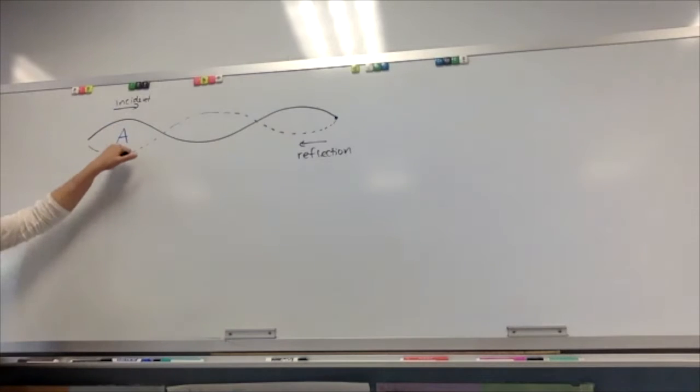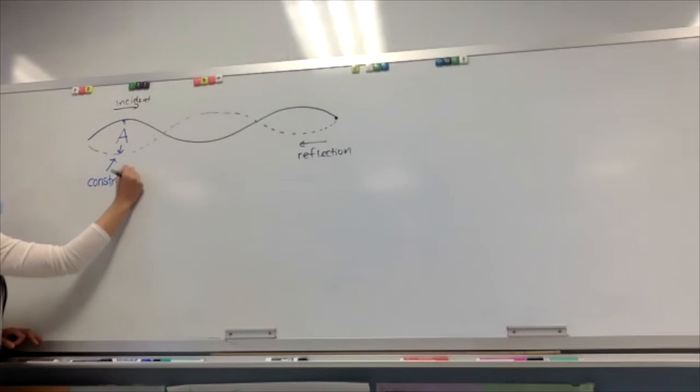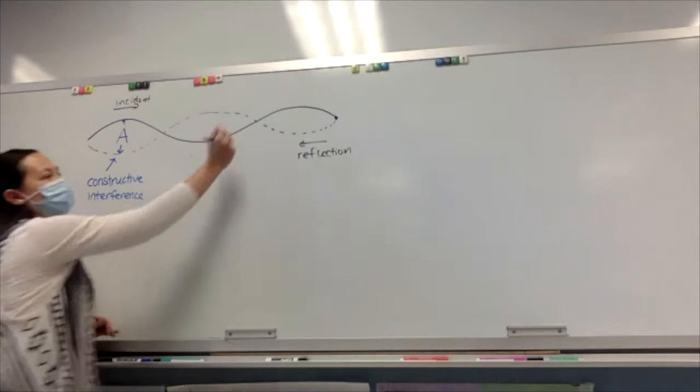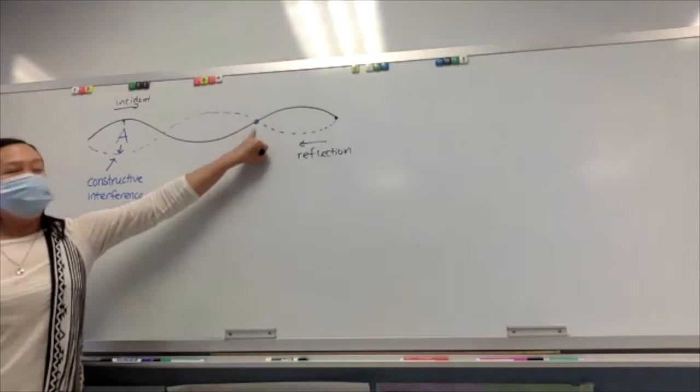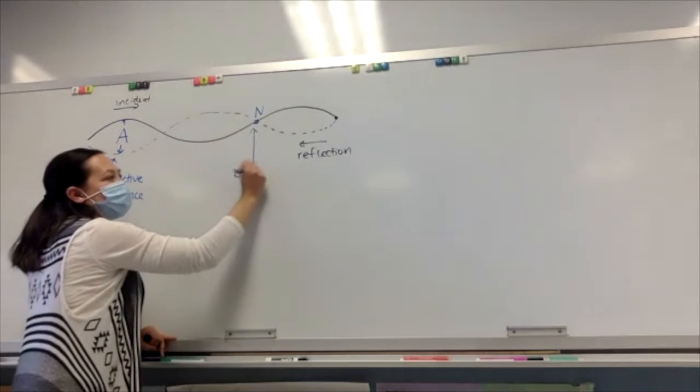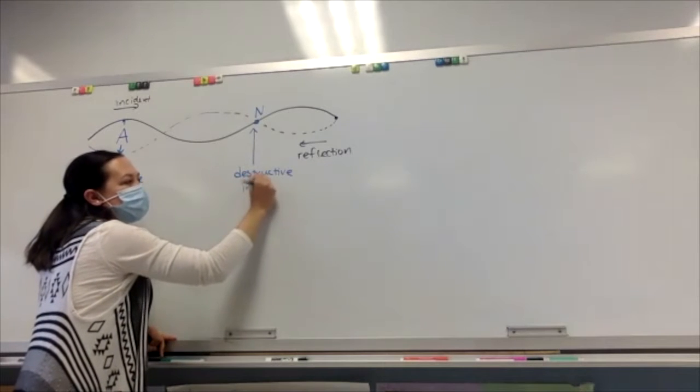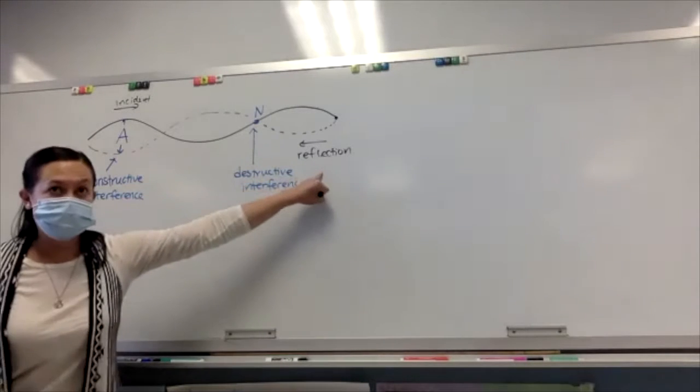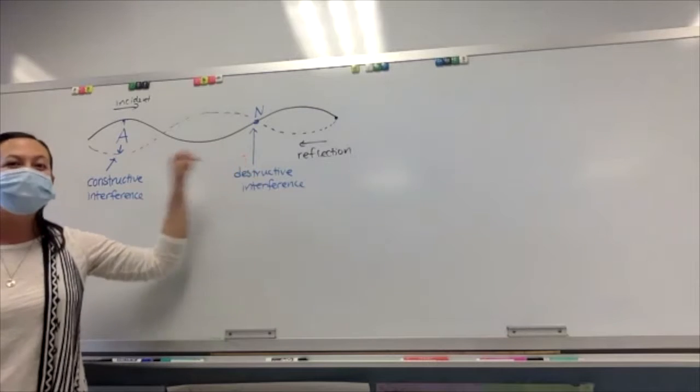What do we call these bumps right here? Antinodes where the amplitude is biggest. What that actually is, is that's a point where you have constructive interference. And constructive means that the amplitudes add together to make a bigger wave. And then the node would be our destructive interference. So standing waves kind of put a bunch of different things together. It puts together reflection and interference to make a pattern of nodes and antinodes.